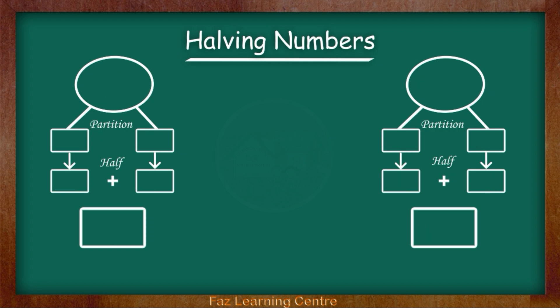The next number that we are going to halve is 52. Now we are going to partition the number 52. 52 has 5 tens in it. 5 tens equals 50. 52 has 2 ones in it. That goes in this box. The number 2.